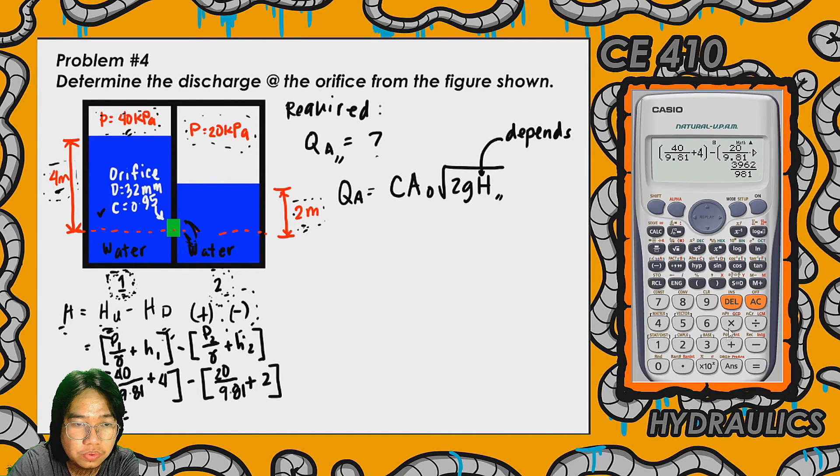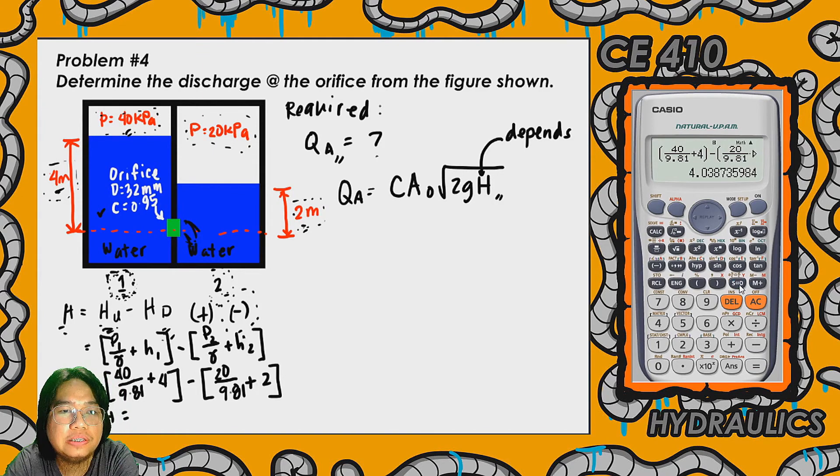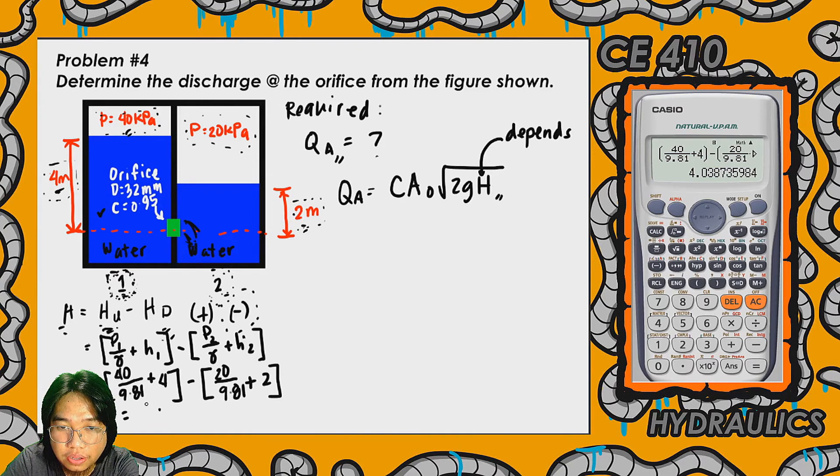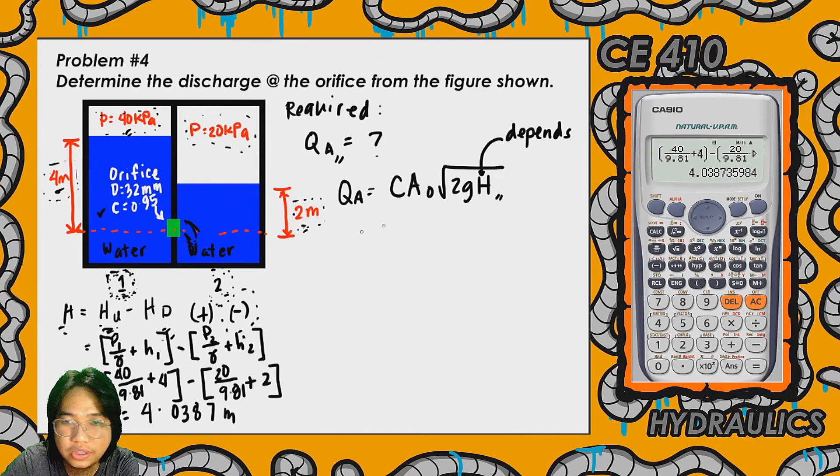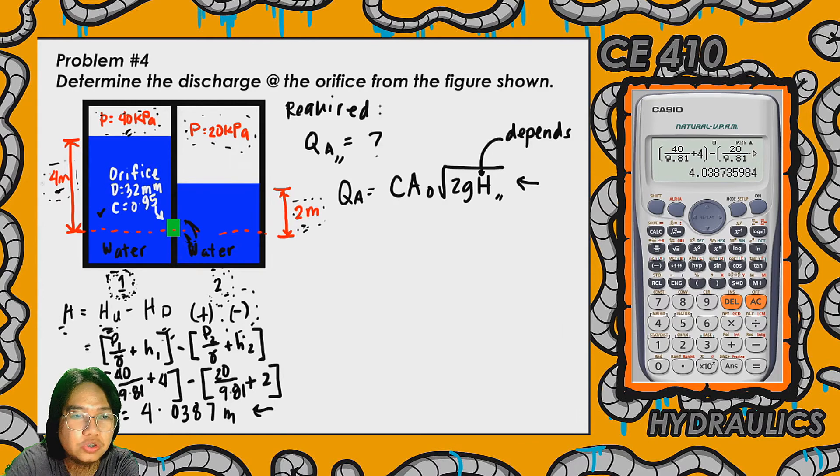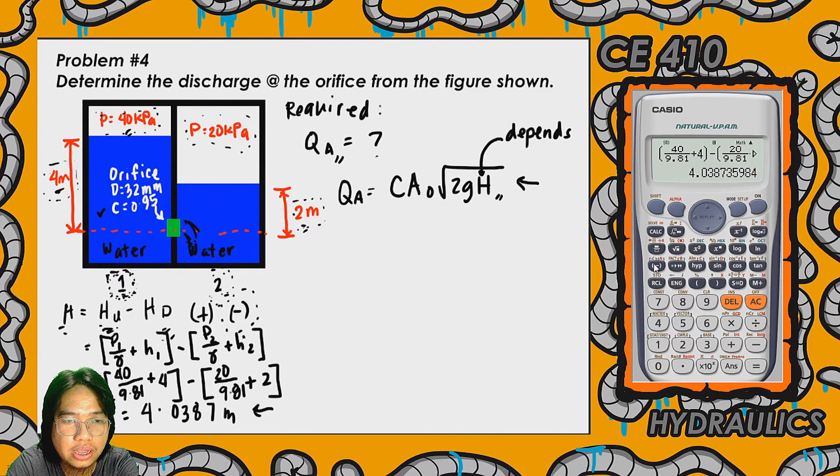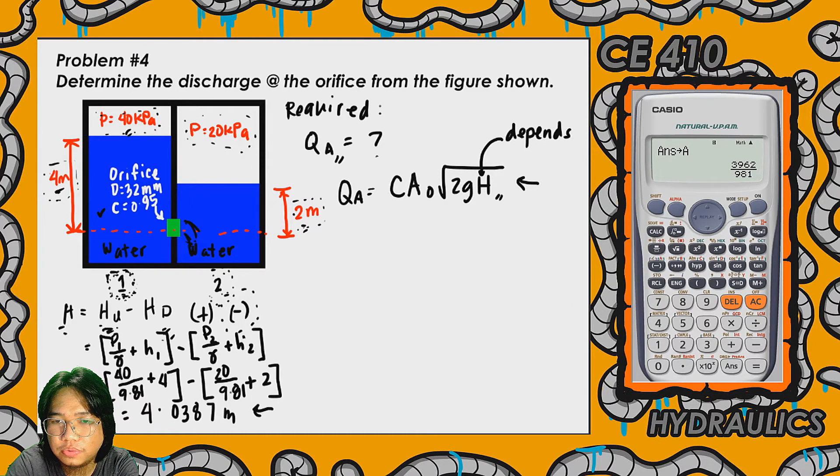The difference in energy head between upstream reservoir and downstream reservoir is 4.0387 meters. Since we're going to use this H in our working equation, let's store this at A. That's shift, store, A.